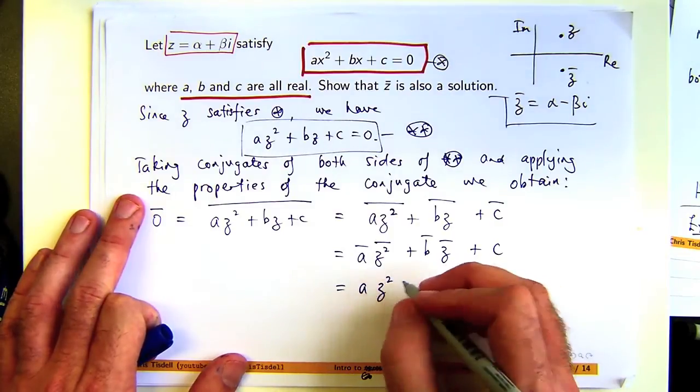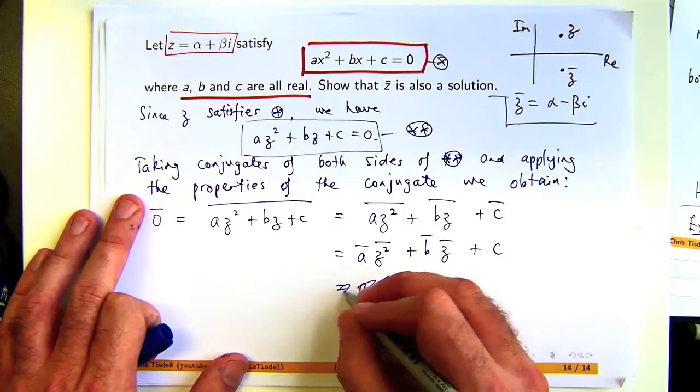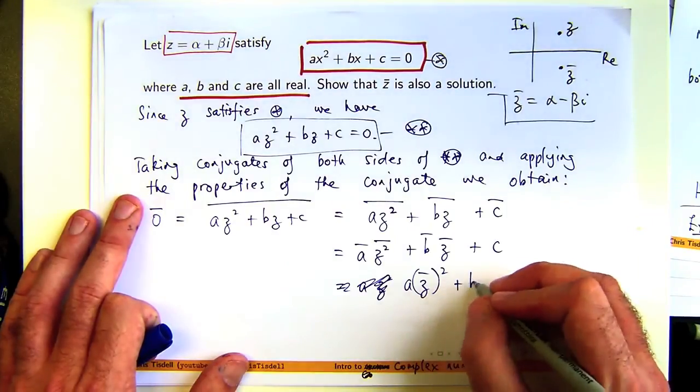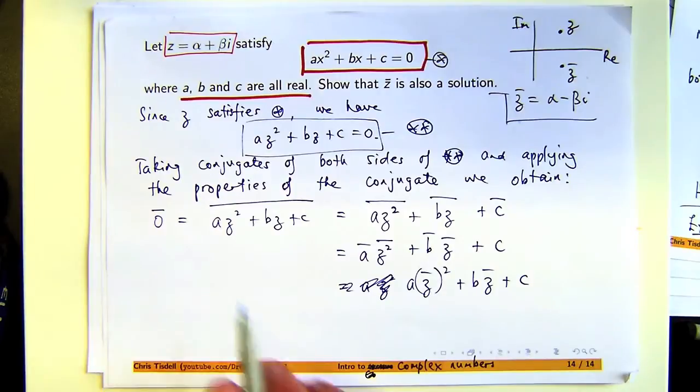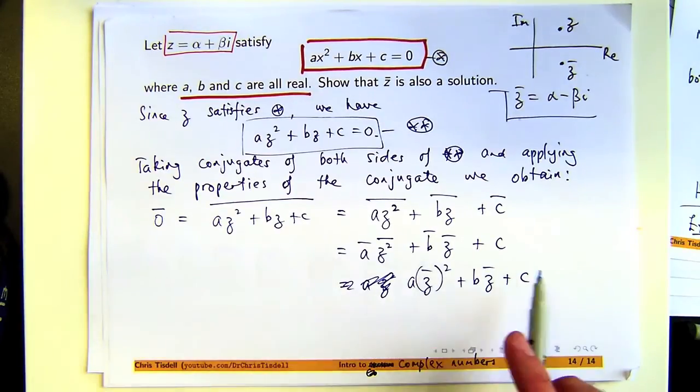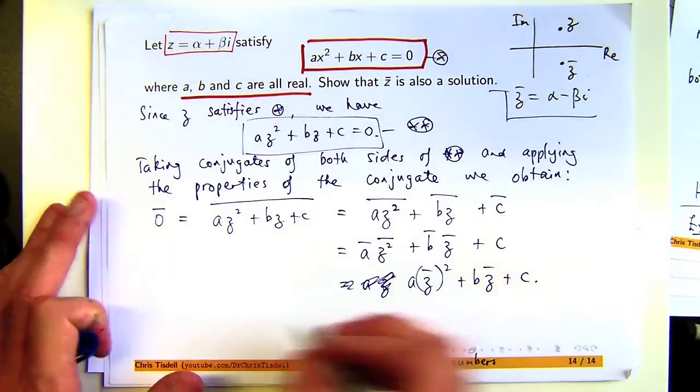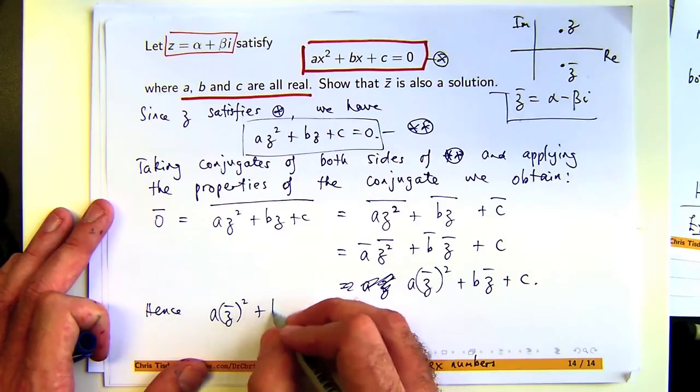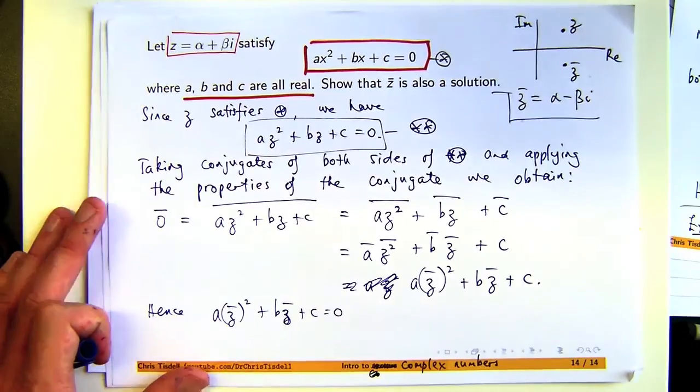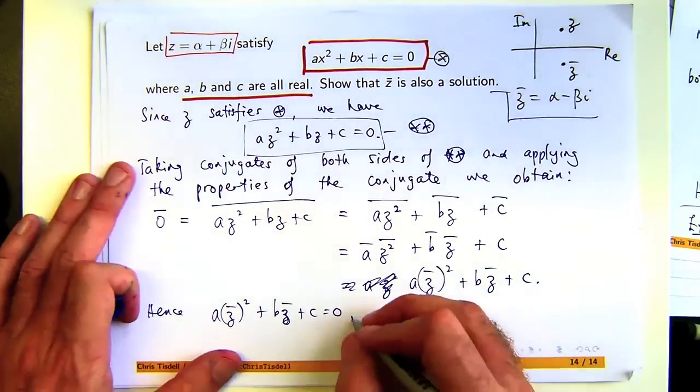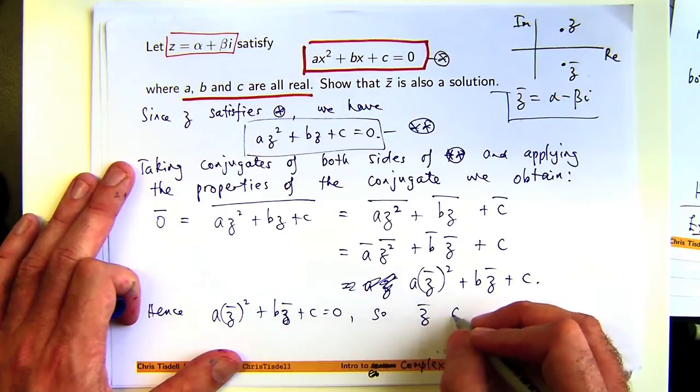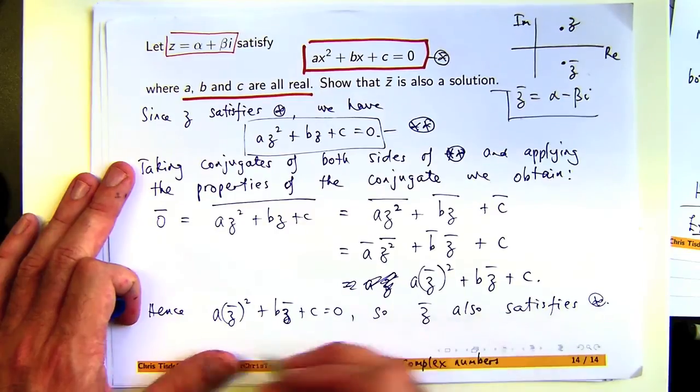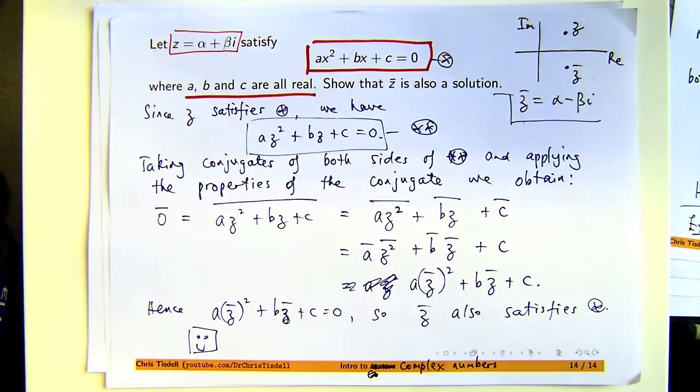So I'm going to put that in there and put brackets around it to make sure we get that. So we know that that's zero, the conjugate of zero is zero. So we know that this becomes the following. What do we know then? Well, we know that z bar satisfies star.